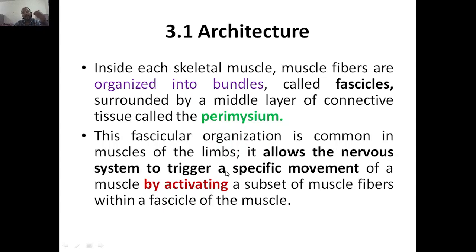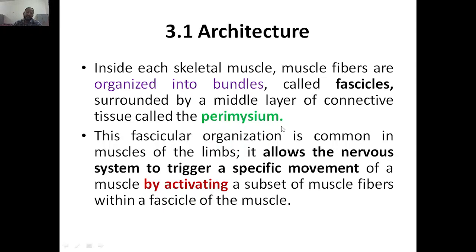The nervous system triggers specific movements — that means contraction and relaxation — through these particular fibers. That is why muscle fibers are there, which are helpful for the nervous system to trigger the specific movement of the muscle by activating subsequent muscle fibers. Whatever muscle fibers are activated, based on that your movement will be there. This is why we have muscle fiber bundles arranged.